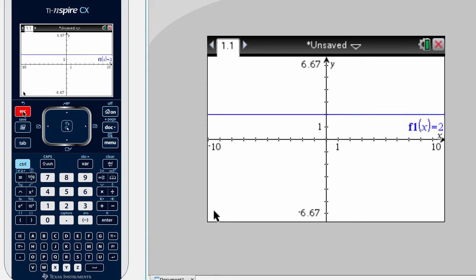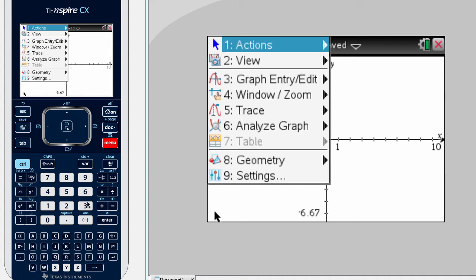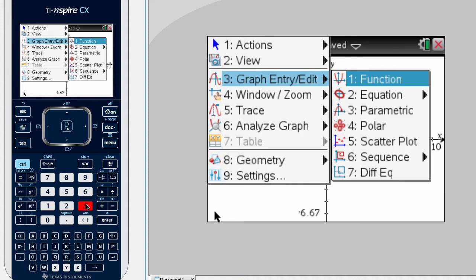Let's undo what I've just done, and we're going to show you a different way to graph. Again, we're going to select menu, except this time we're going to click 3, and then number 2 equation,